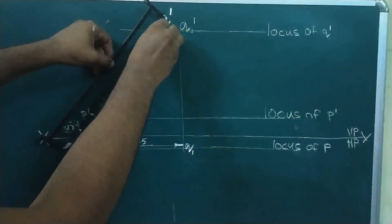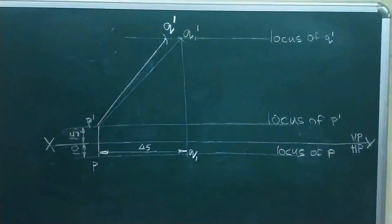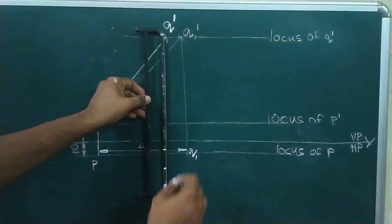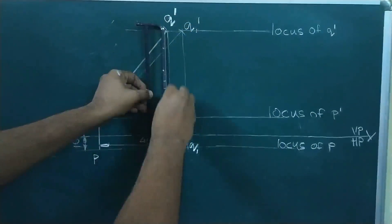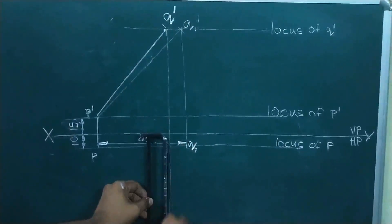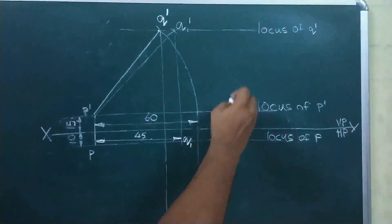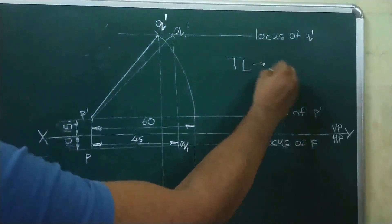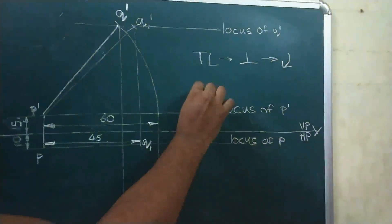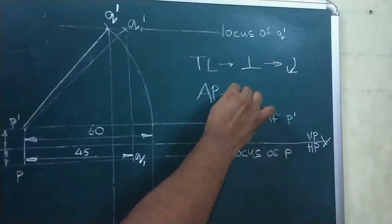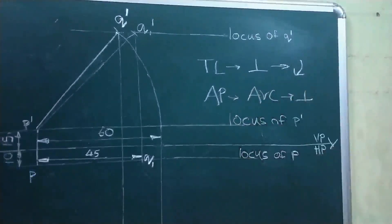After darkening that line, from Q-dash draw the projector line — that line must be perpendicular — and then extend it to the top view. Now I am going to proceed with the front view true line end, that is point Q. If processing with a true line, first make a perpendicular line and then arc; if it is an apparent line, first make an arc and then draw the perpendicular line.